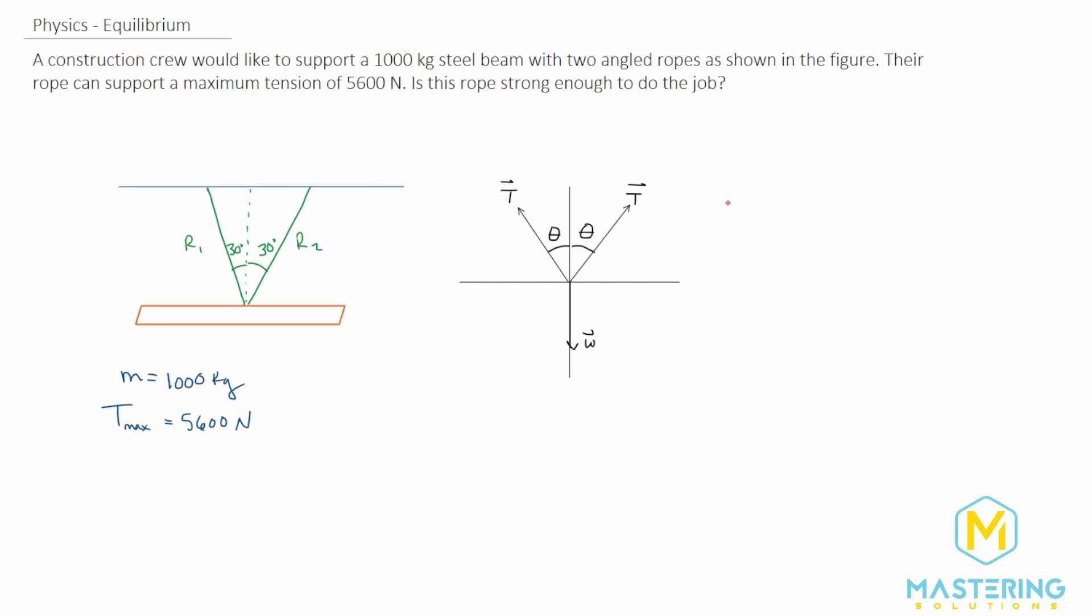So next let's sum our forces in the y direction. Sum of forces in the y: we have tension in the y direction plus another tension that's the same in the y direction, and then we also have weight. Obviously we're going to put minus w here in just a second, and then that is equal to zero newtons because there is no acceleration - it's an equilibrium, so static equilibrium.